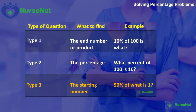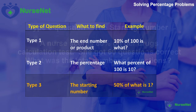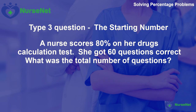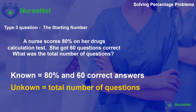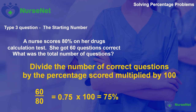Finally, a Type 3 question where we find the starting number. A nurse scores 80% on her drugs calculation test and answered 60 questions correctly. What was the total number of questions? We've been given the percentage and the number of correct answers, but not the total questions set. To work this out, divide the number of correctly answered questions by the percentage score: 60 divided by 80% gives 0.75. Multiply that by 100 to get the total number of questions, which is 75.